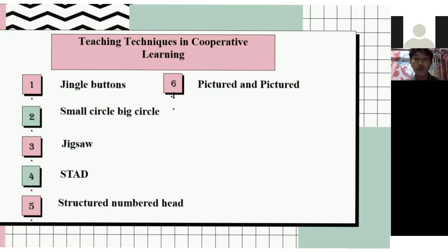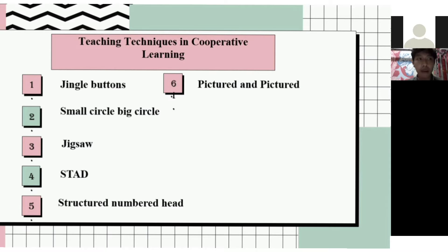The next element is communication between members. This element requires that learners be equipped with various communication skills, because the success of the group also depends on the willingness of each member to listen to each other and their ability to express their opinion.